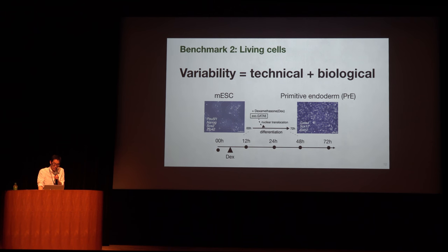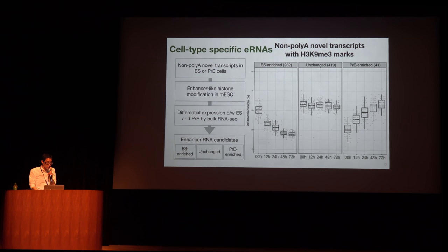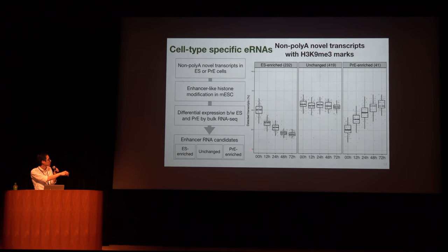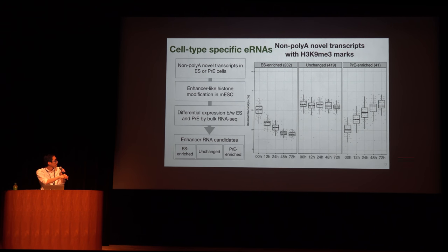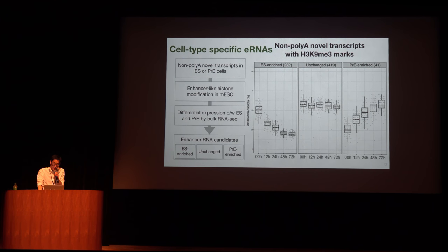Next, we evaluated eRNA detection ability of RamDA-seq using living cells. We used cells collected from different time points across differentiation from mouse ES cells to primitive endoderm cells, or PrE cells. We further classified eRNAs into ES-enriched, PrE-enriched, and unchanged subsets. Detection rate of ES-enriched eRNAs was highest at ES cells and decreased across differentiation. For PrE-enriched eRNA sets, detection rate increased across differentiation. For unchanged eRNAs, the detection rate remained constant. These results indicate RamDA-seq can detect eRNAs in a cell-type specific manner.